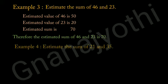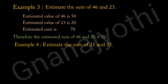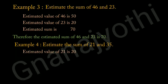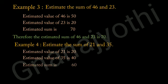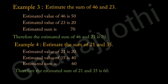Now look at example 4: Estimate the sum of 21 and 35. The estimated value of 21 is 20, and the estimated value of 35 is 40. The estimated sum is 60 — that is, 20 plus 40 is 60. Therefore, the estimated sum of 21 and 35 is 60.